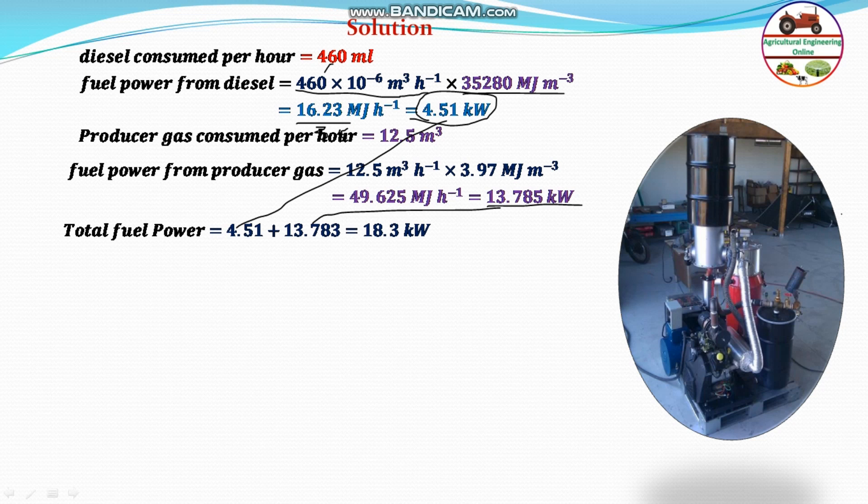Now it is asked the brake thermal efficiency. Actual power produced is 3.5 kilowatt by the generator. The generator is coupled to the engine. Therefore, the total power output is 3.5 kilowatt.